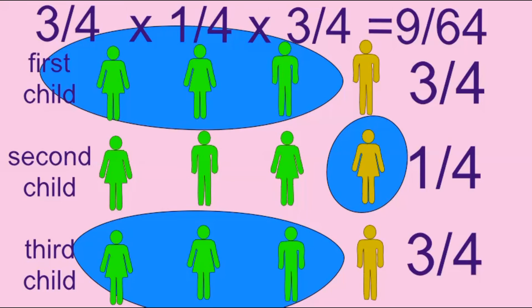The probability of 9 over 64 represents the chance that in a family of three children, the first has the dominant trait, the second has the recessive trait, and the third has the dominant trait.